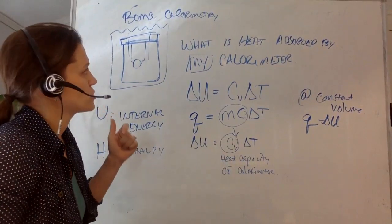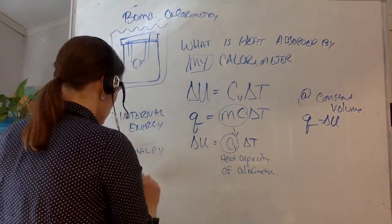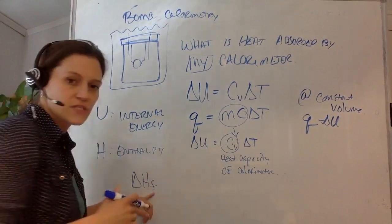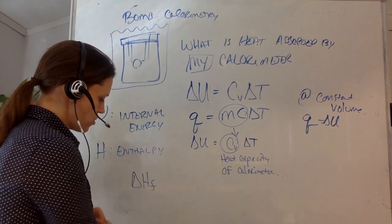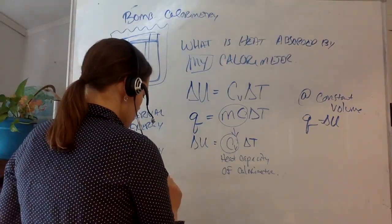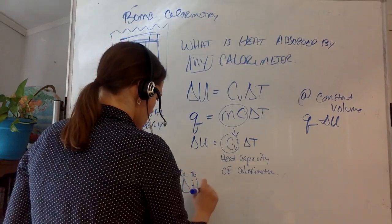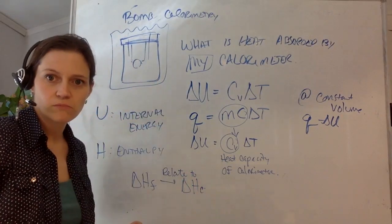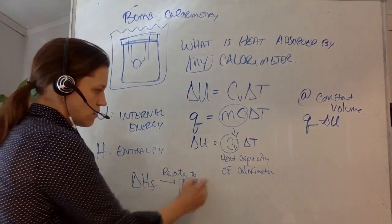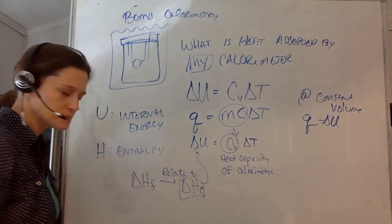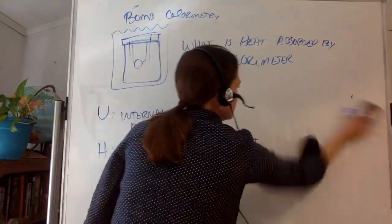Let's go back to our main question, which is the overall question of the lab: what's the delta H of formation of some compound? And so in order to get to the delta H of formation, we need to relate that to the delta H of combustion. But delta H of combustion needs to now be related to delta U of combustion.